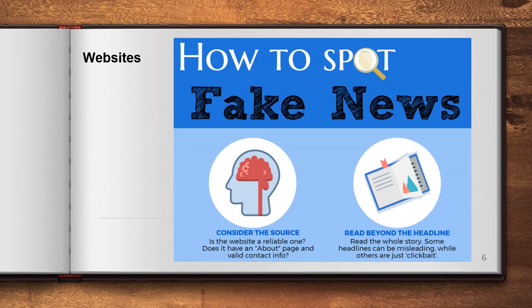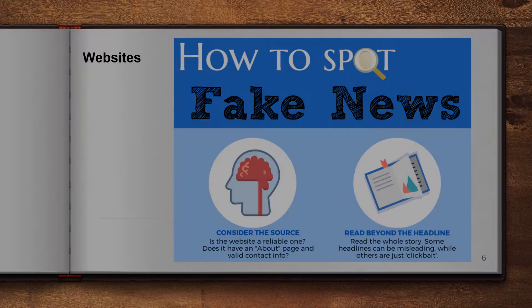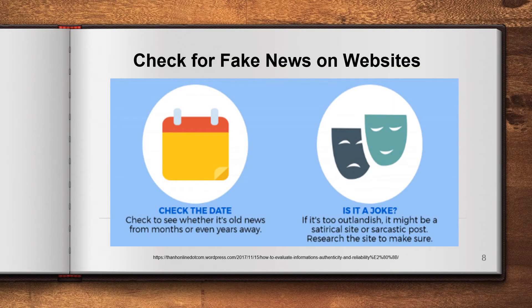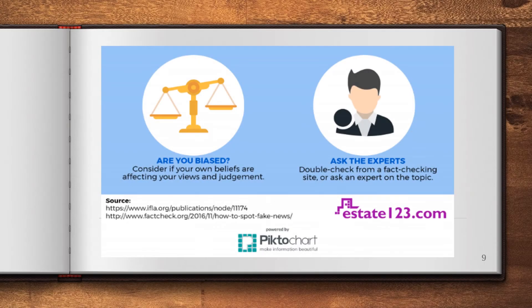So how do we spot fake news? We've talked about checking whether a site has an 'About' page. We must read beyond the headline, because sometimes the headline is written to hook us in, but as you keep reading you realise the information isn't accurate. Check the author. Check the supporting sources. Check the date. Try to work out whether the information is even just a joke. Work out your own views and consider whether you're coming at the topic in an unbiased way. If you have any doubts at all about the information, try to find a fact-checking website.